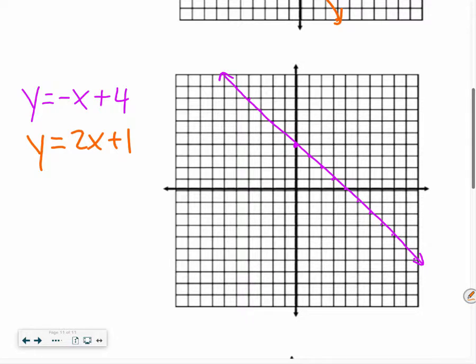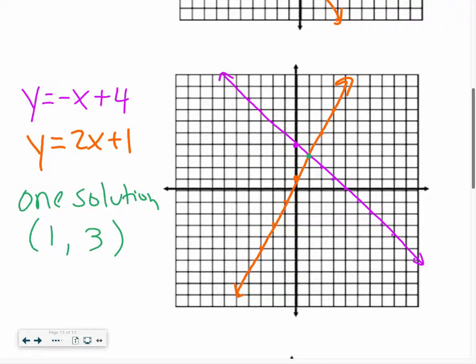We have the equation y equals 2x plus 1, so I start at my y-intercept with 1. My slope is 2, so I'm going to go up 2 over 1, up 2 over 1, or I can go down 2, left 1. Now I look at what points do they intersect. This time we also have one solution, and it is at 1, 3. So that would be my answer for that problem.